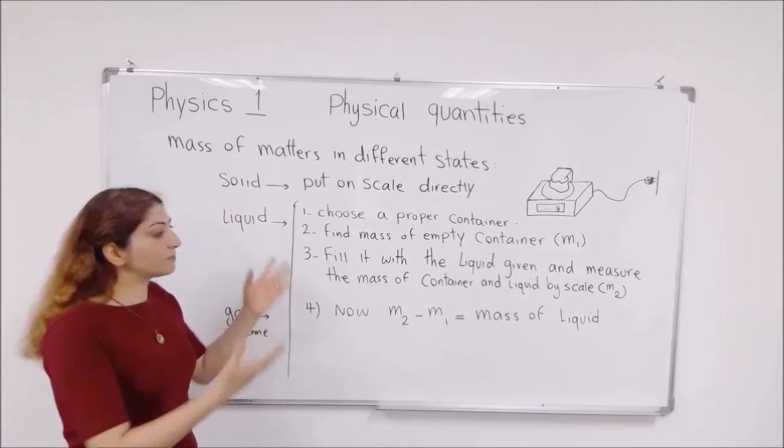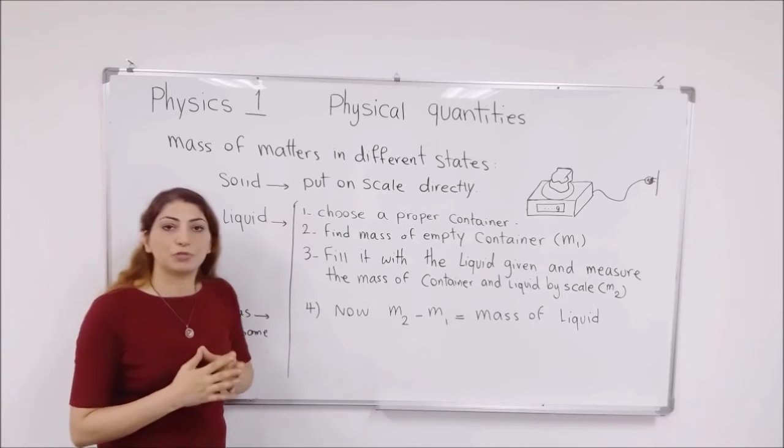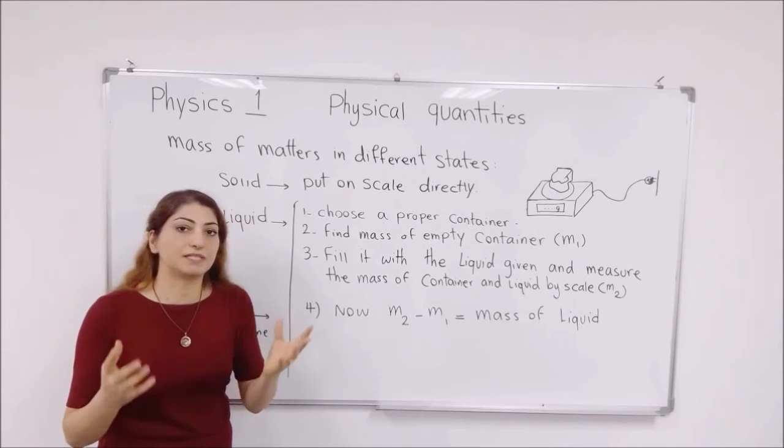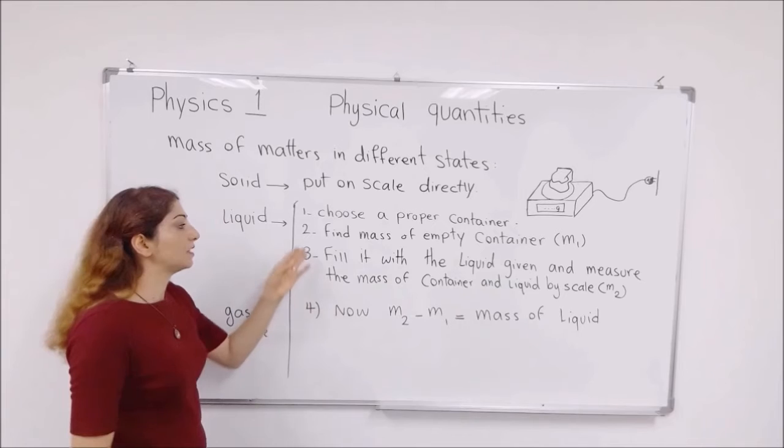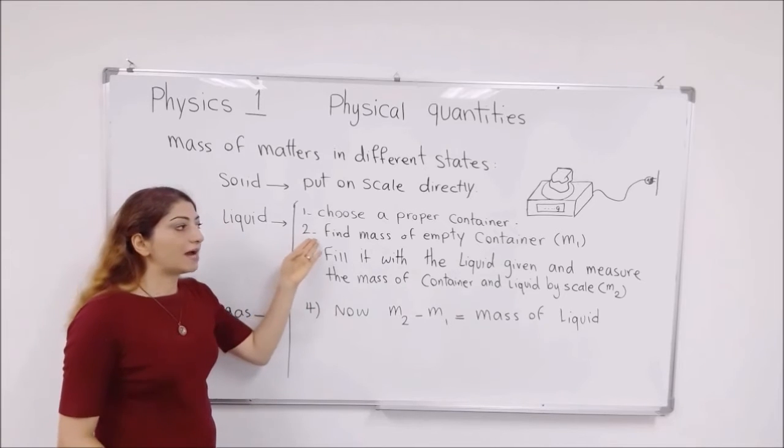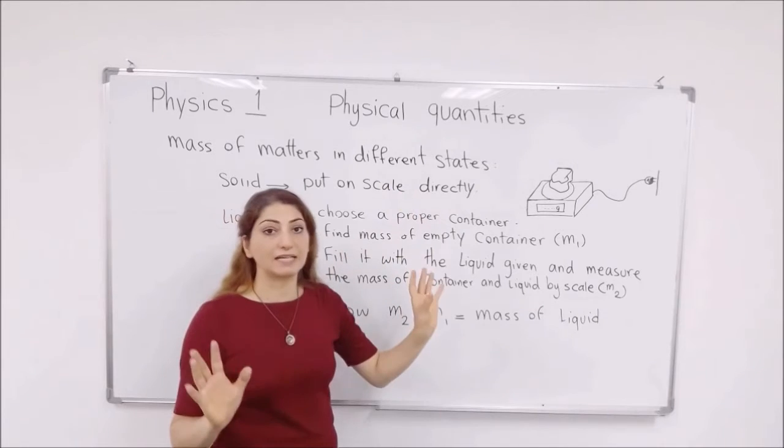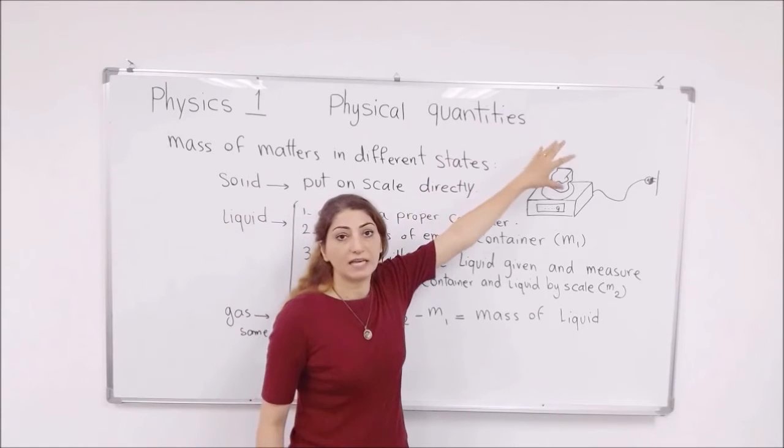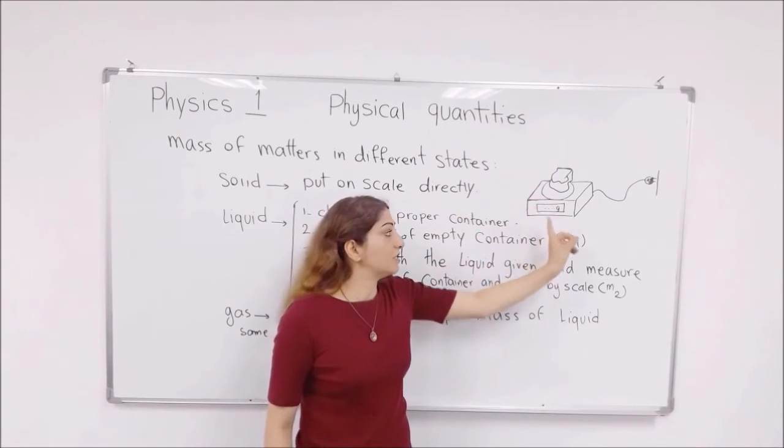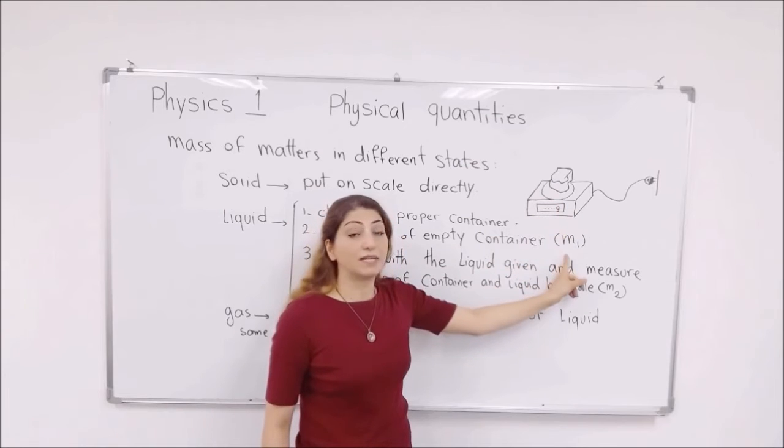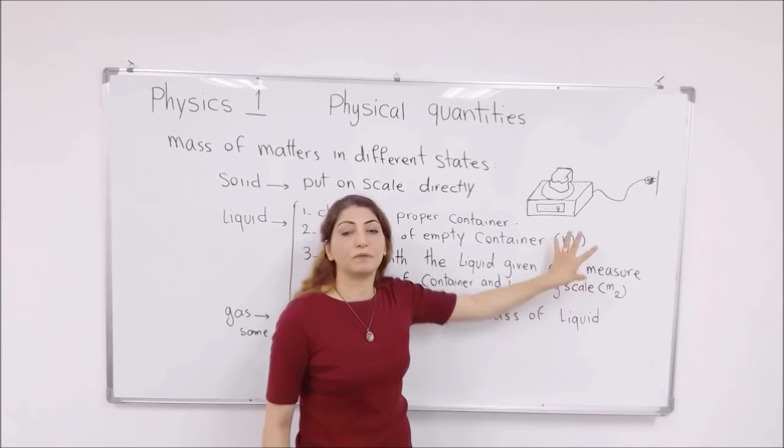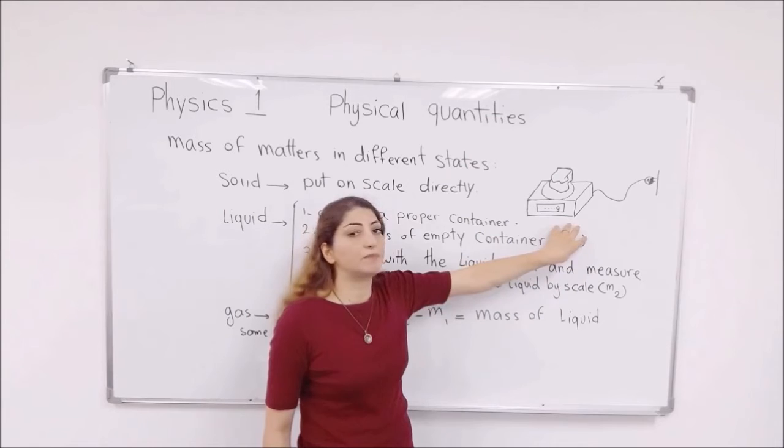So what is the procedure? First, you have to choose a proper container, for example, a cup. Then you have to put the cup which is empty and not been filled yet on the scale and read the mass from the screen and call it as M1, whatever it is. This is the mass of the empty container. You call it as M1 grams.